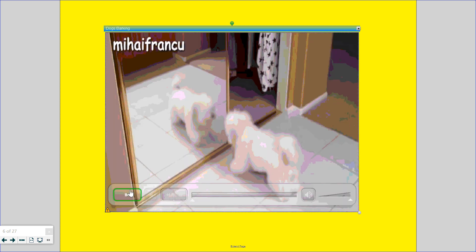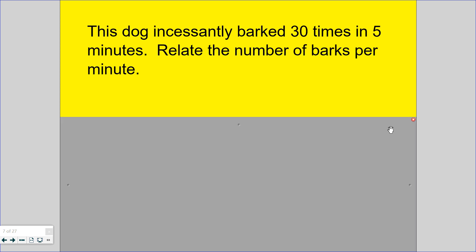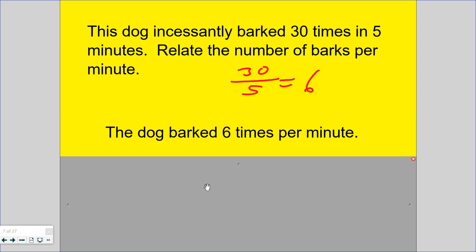So as you can tell, the dog is not aware that it's seeing its image as it sees another dog. So this dog incessantly barked 30 times in 5 minutes. Can you relate the number of barks per minute? So how many times does it bark every minute? Each minute, 1 minute. 30 divided by 5 is 6.